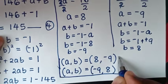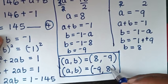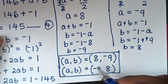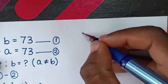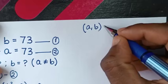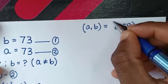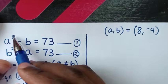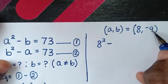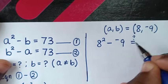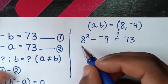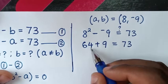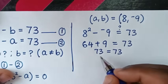These are the two solutions from this problem. The value of a in the first solution is the value of b in the second solution, and vice versa. Let's check these values. From the first solution, a comma b equals 8 comma negative 9. We use the first equation: a squared minus b equals 73. So 8 squared minus negative 9 equals 64 plus 9, which is 73. Left side and right side are equal.